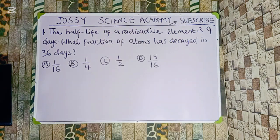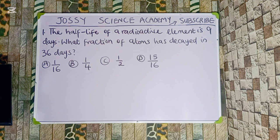The half-life of a radioactive element is 9 days. What fraction of atoms has decayed in 36 days? Option A: 1 over 16. Option B: 1 over 4. Option C: 1 over 2. Option D: 15 over 16.